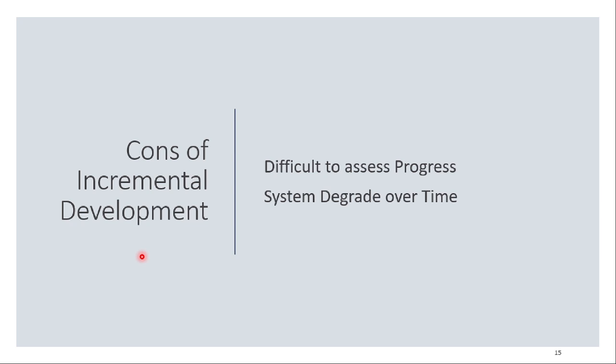Cons of the incremental model. Difficult to assess progress — the incremental model is not easily visible because activities are running concurrently, making it a complex calendar. Managers need regular deliverables to measure progress. If systems are developed quickly, it is not cost-effective to produce documents for every variant. System degrades over time — system structure tends to degrade as new increments are added unless time and money are spent on refactoring, making further changes increasingly difficult and costly.